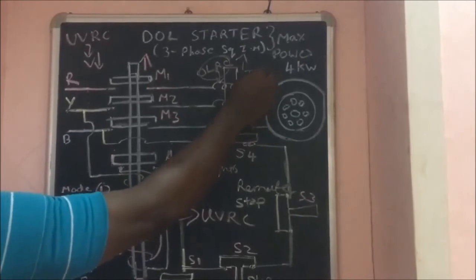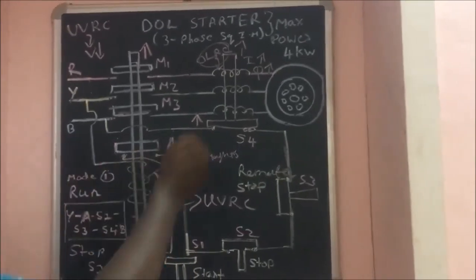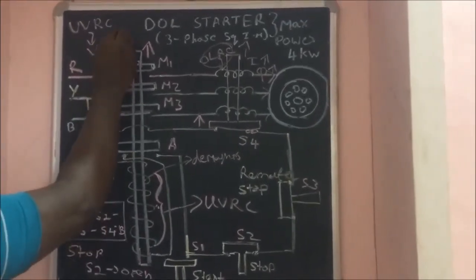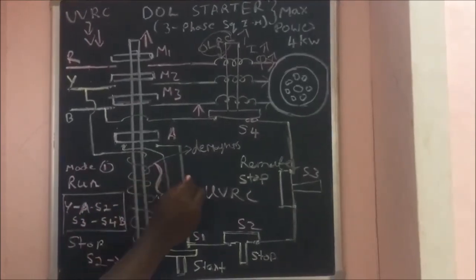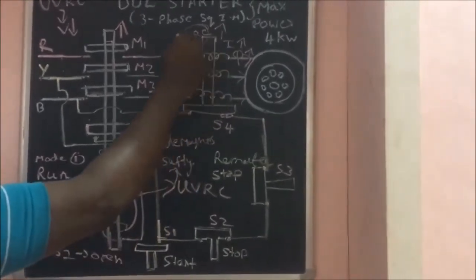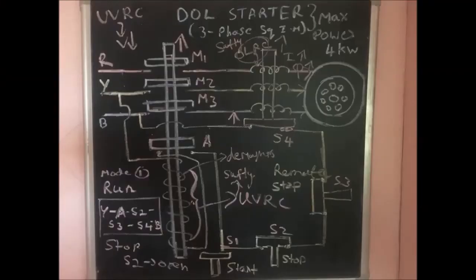If you want to stop the motor, press the stop button. It will open and current will not flow in the under-voltage release coil — it becomes demagnetized. Due to gravitational force, M1, M2, M3 conductors go down to the open position. When conductors are open, the motor turns off. This same condition also occurs whenever the supply fails.